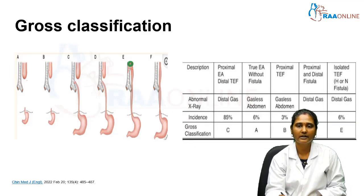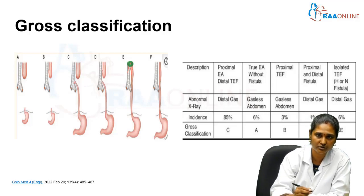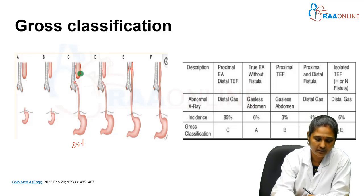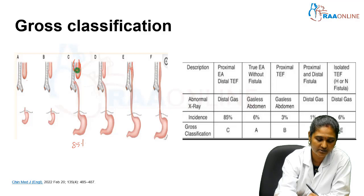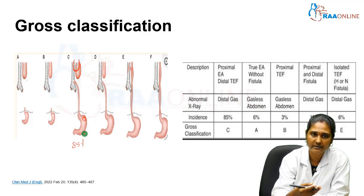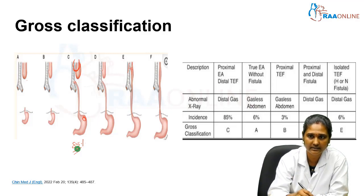Regarding incidence, the most common form is Type C — proximal esophageal atresia with a distal fistula — contributing around 85%. On chest X-ray you will see coiling of the nasogastric tube in the upper tracheal part, and the antral gas shadow will also be visible. This tells us about the type of fistula roughly from a plain chest X-ray.